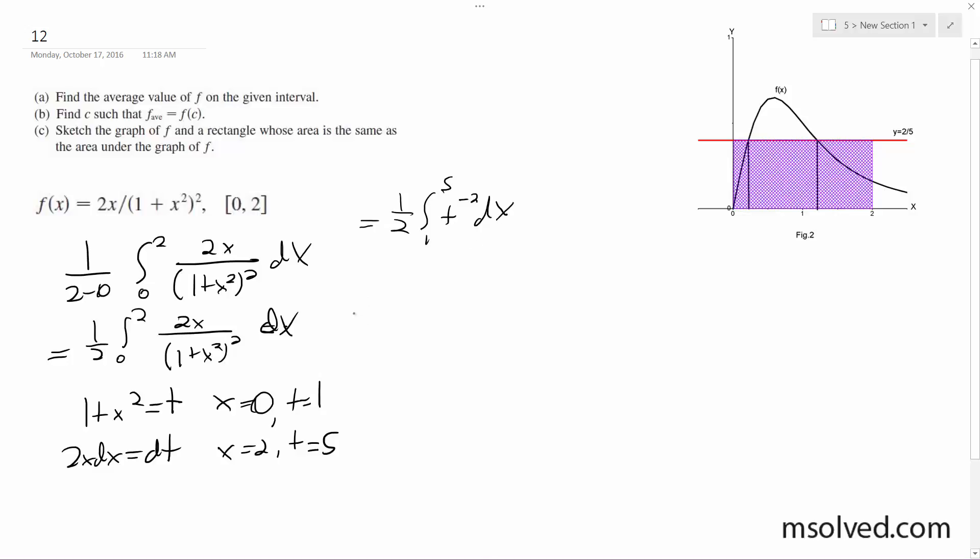So then we get 1 half of negative 1 over t, evaluated from 1 to 5, and we have 1 half of negative 1 fifth plus 1. So f average equals 2 over 5.